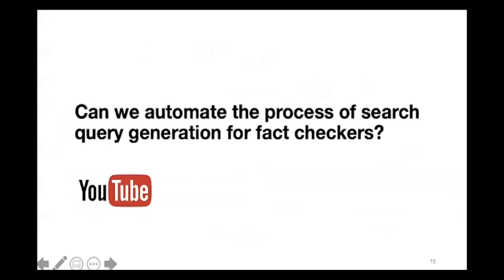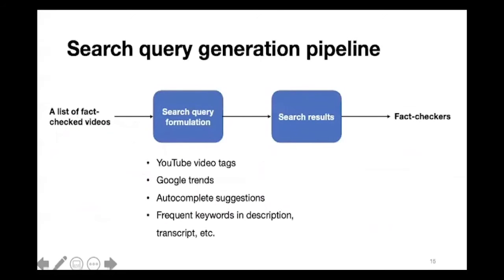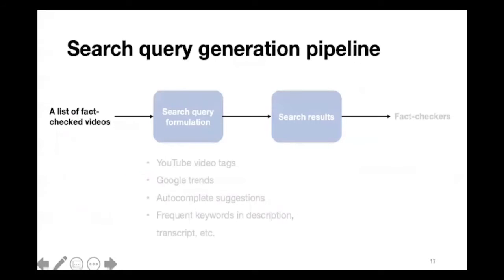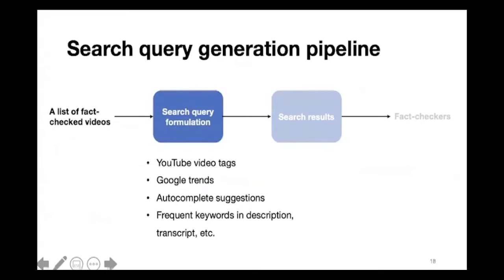As part of our ongoing project, we interviewed 22 individuals from 14 fact-checking teams and organizations across four continents. Those interviews revealed that while online misinformation is increasing exponentially, searching for misleading content mostly remains a manual task. Generation of search queries is still based on guesswork and hit-and-trial methods. The interviews also revealed that monitoring video platforms like YouTube is difficult and lacks good tools. So we asked whether we could automate search query generation for fact-checkers. We are developing a search query generation pipeline to assist fact-checkers in searching content on YouTube, using four methods: YouTube video tags, Google Trends, YouTube autocomplete suggestions, and frequent words in video descriptions and transcripts.